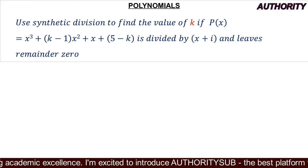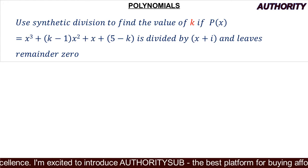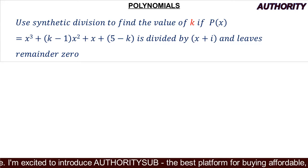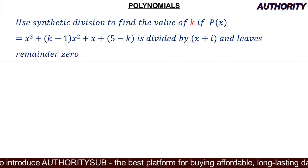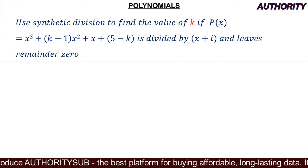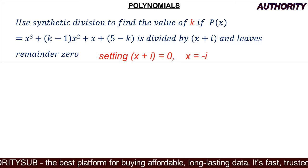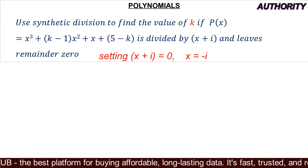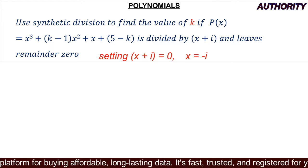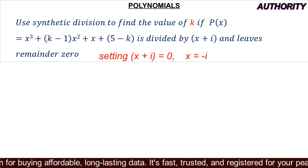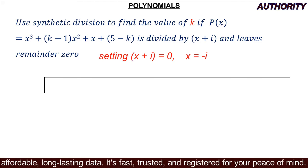Alright, let's go — it's very simple. So p(x) = x³ + (k−1)x² + x + (5−k). This is our dividend and our divisor is x + i. Using synthetic division, we set the divisor to zero, so x = −i.